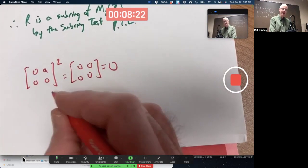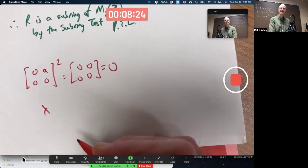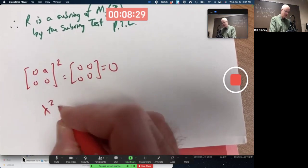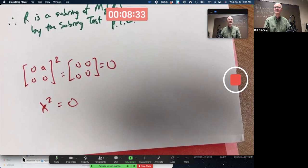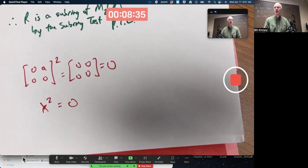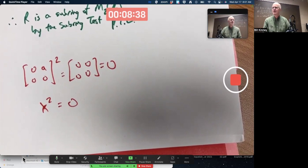In particular, if you think of this matrix as a variable, x, and square it, and ask for all solutions of this equation, in this subring, there are infinitely many solutions.